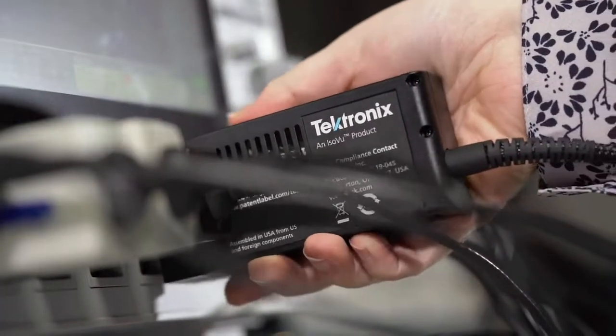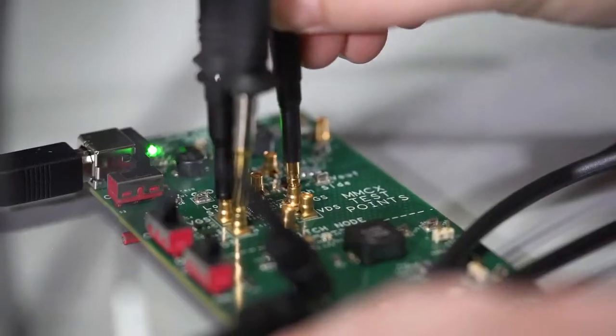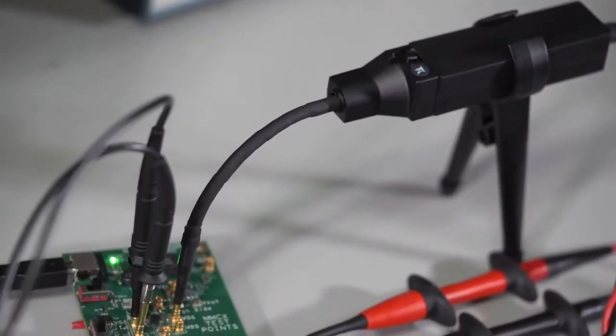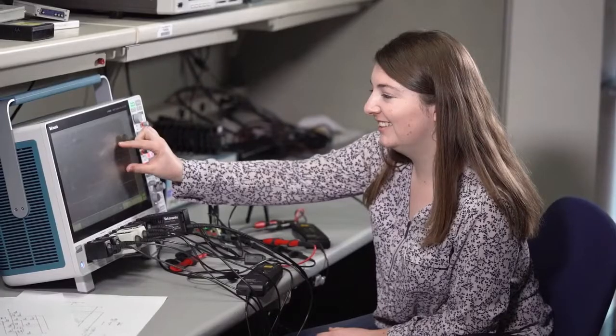ISOVUE probes offer a unique combination of high bandwidth, dynamic range, and common mode rejection ratio that enables you to make previously impossible measurements such as high side gate voltage.